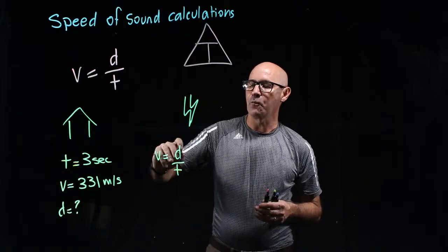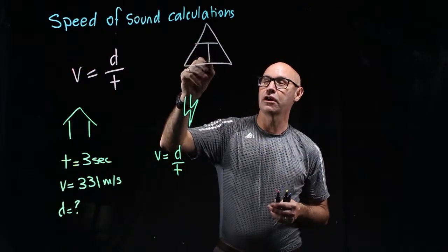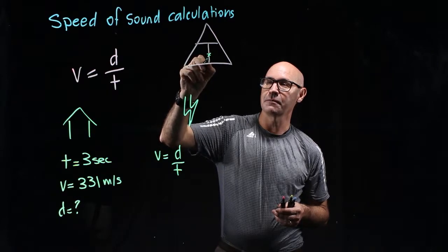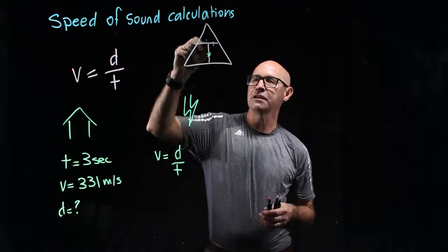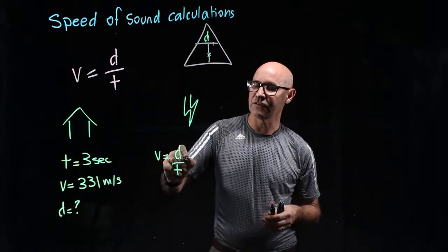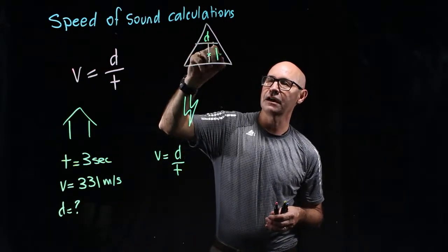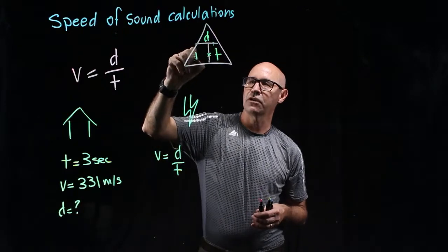Now, what we need to make sure we know, though, is that this line here means times and this line here means divide. So, we've got our D must be at the top and our T under the divide is here. And then we've got V.